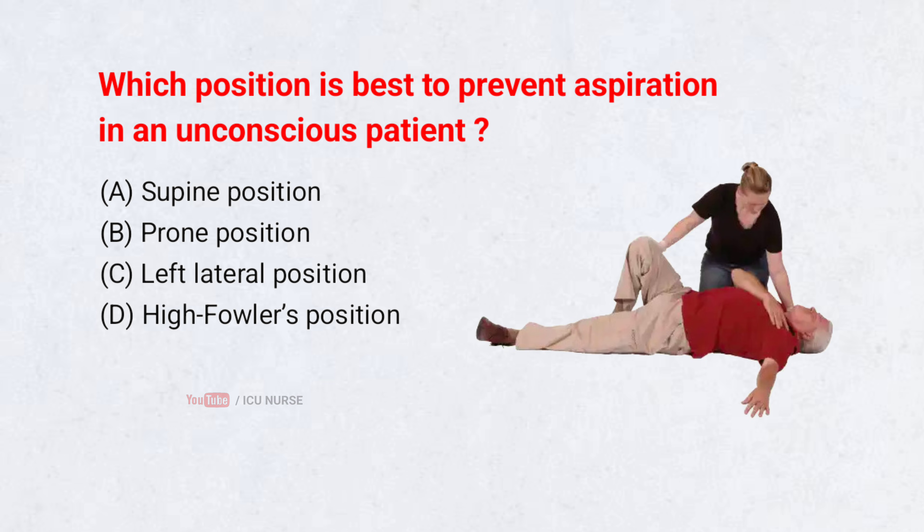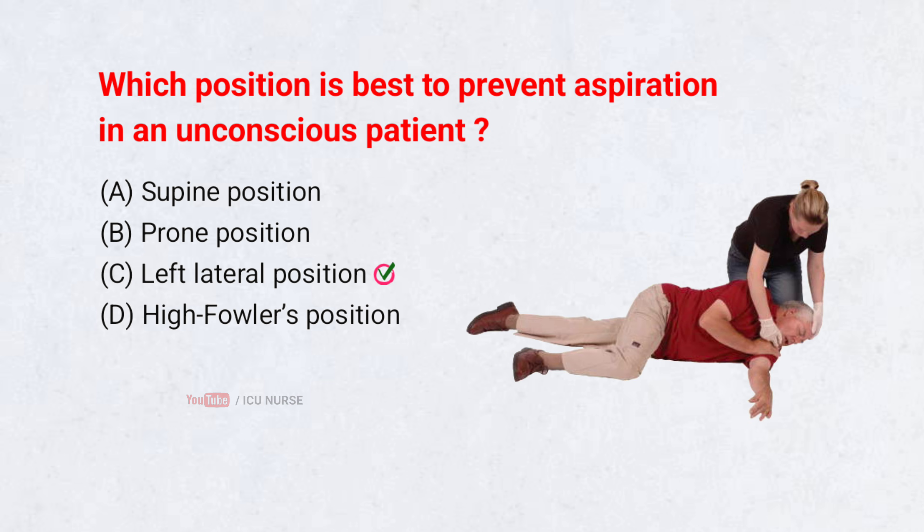Which position is best to prevent aspiration in an unconscious patient? A. Supine position. B. Prone position. C. Left lateral position. D. High Fowler's position. Correct answer: C. Left lateral position. The left lateral side-lying position keeps the tongue from falling back and allows secretions to drain out, reducing the risk of aspiration.